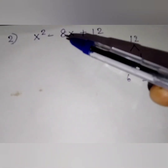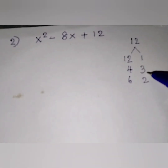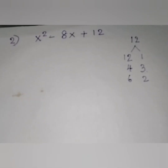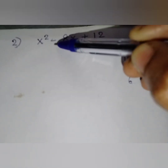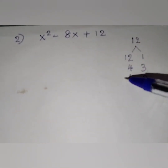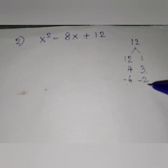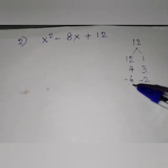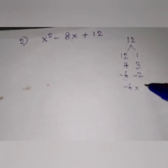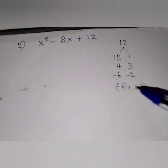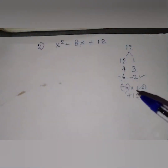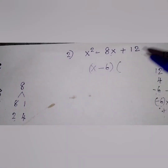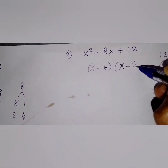If we add or subtract, will we get 8? 8 and 1 — no. 4 plus 3 or 4 minus 3 — no. 6 plus 2 or 6 minus 2? When we add 6 and 2, we get 8. But we need minus 8. So we are going to write minus 6 and minus 2. If we add minus 6 and minus 2, we will get minus 8. Also, if we multiply minus 6 and minus 2, we will get plus 12. So our factors are x minus 6 and x minus 2.